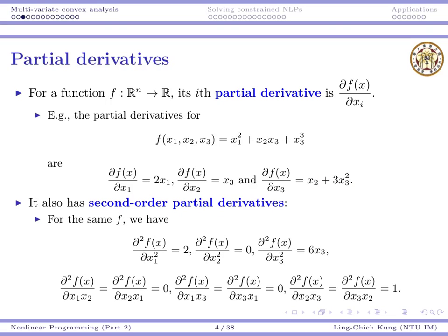We may also take second order partial derivatives. There are two kinds: first, we take the derivative of one variable twice. For example, differentiating f by x1 twice gives 2. For x2 squared, since there is no x2-squared term, we get 0. For x3, taking the second derivative gives 6x3.